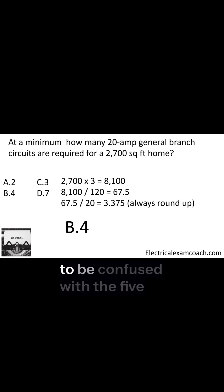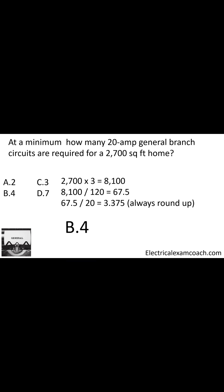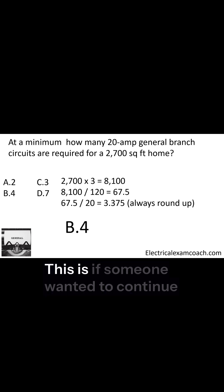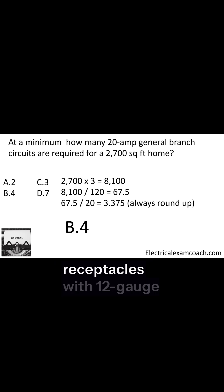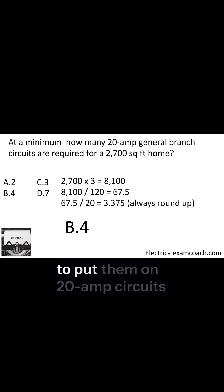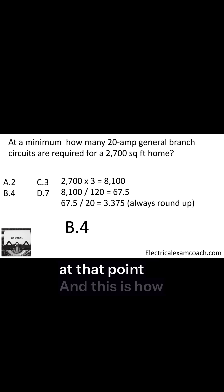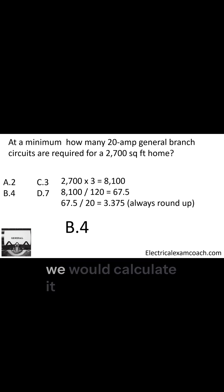These are not to be confused with the five required ones. This is for someone who wanted to wire their home for general lighting and receptacles with 12 gauge wire — they'd be allowed to put them on 20 amp circuits at that point, and this is how we would calculate it.